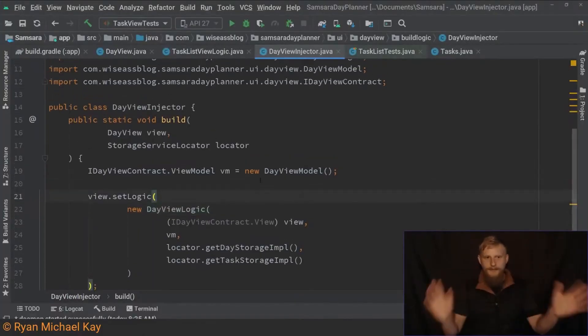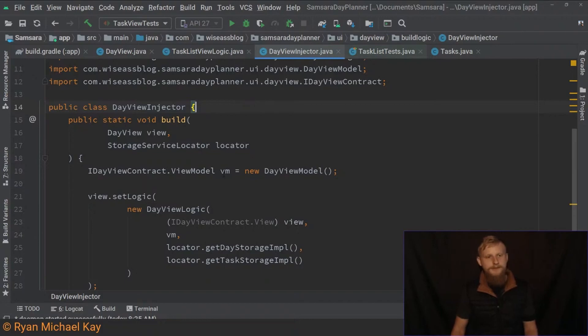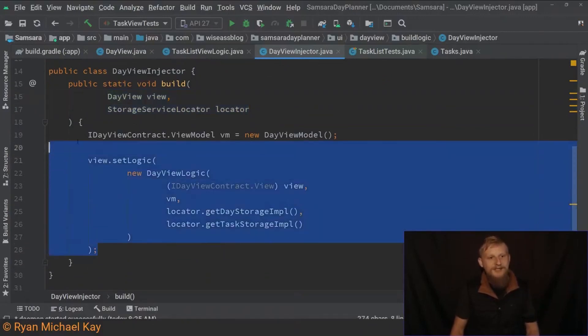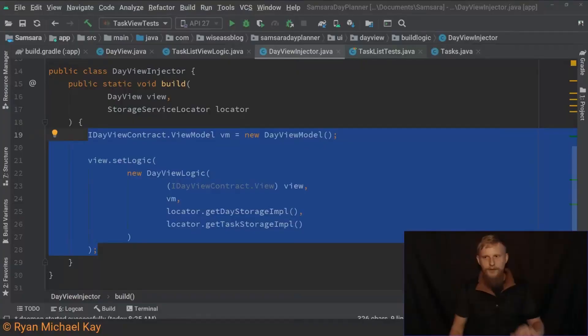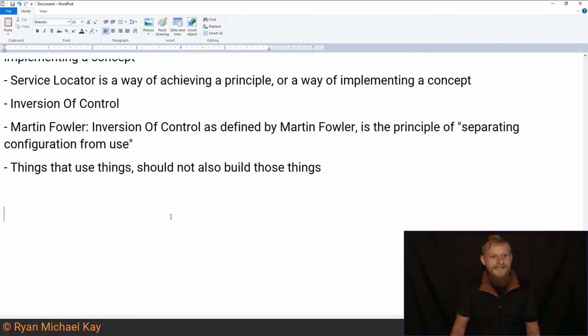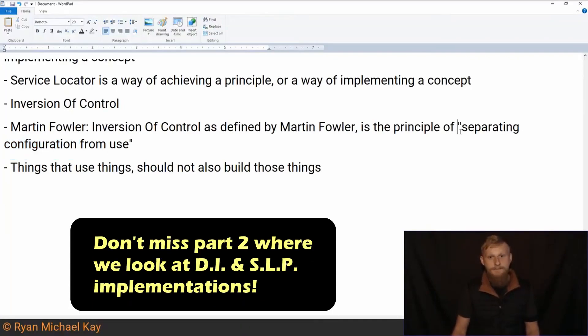So I don't care what you do. You can use a service locator, constructor injection, field injection, dagger, hilt. But our goal here is we're pulling the code required to build things into its own special place of the application. We can do that using dependency injection or a service locator. But the overarching principle is separation of concerns.